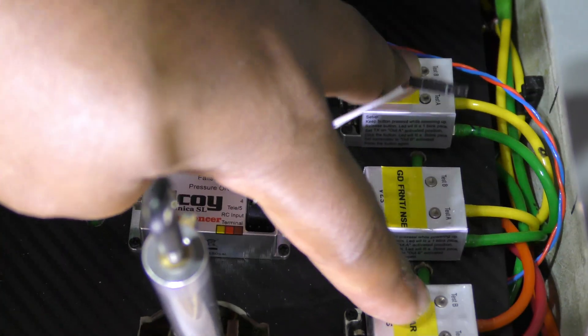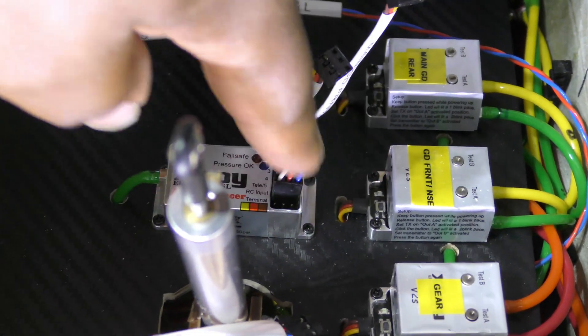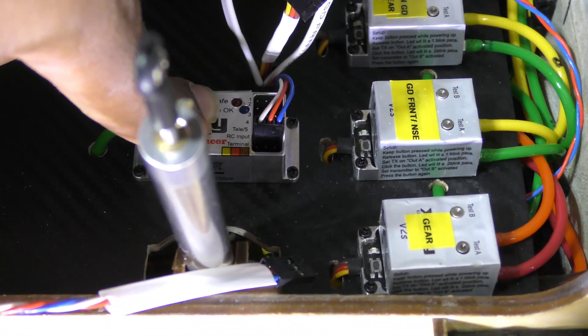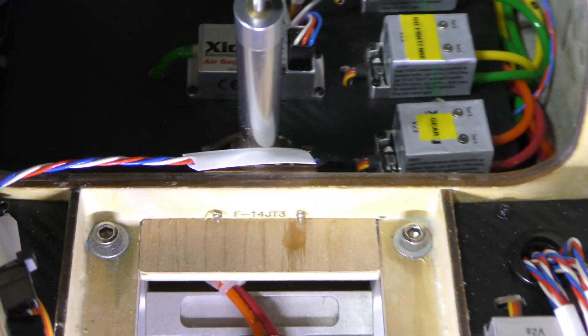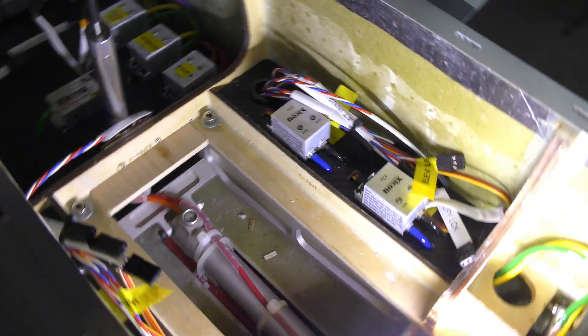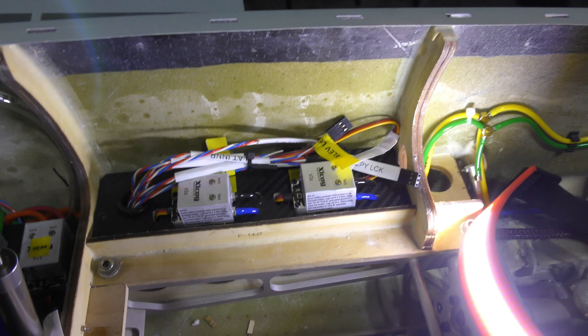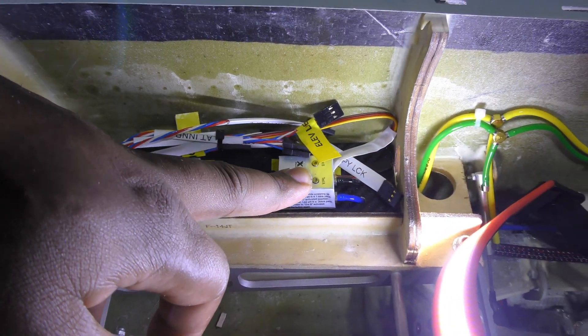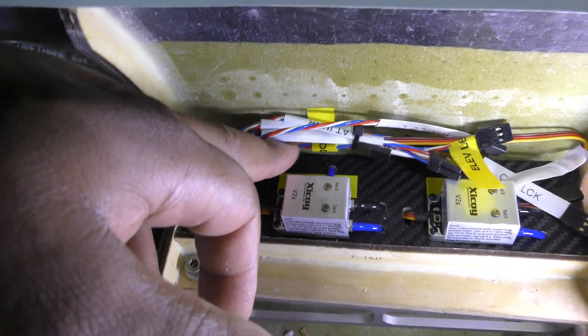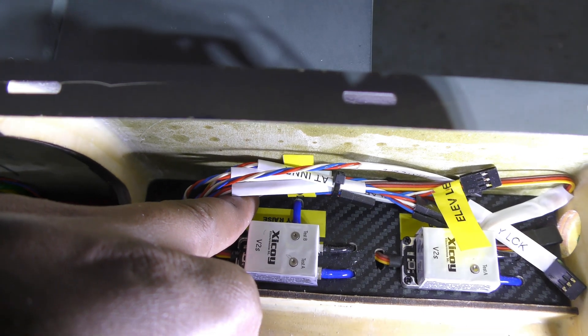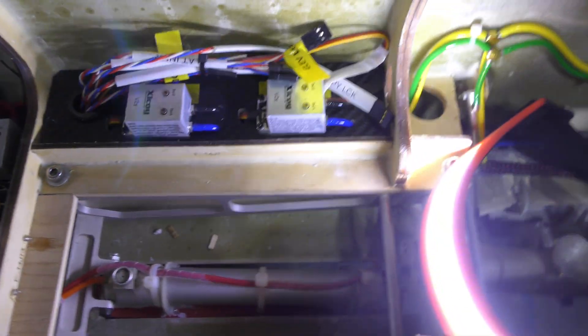These three valves sitting right here, these are their connections, and those are going to go into the Zicor sequencer in there. Then moving on to the front, we have all the other auxiliary stuff. Starting on the right hand side, we have the canopy lock valve, and then we have the canopy raise. They're labeled with the yellow, you can see that a little bit on the side there.